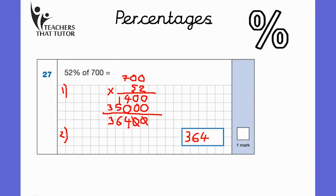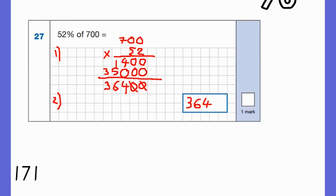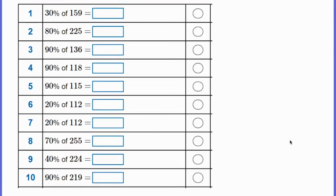You can give this a go yourself now with the practice questions. There are 10. Pause the video here, have a go at them. Remember the two steps: multiply the numbers together, and then finally divide the answer by 100.